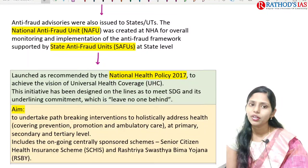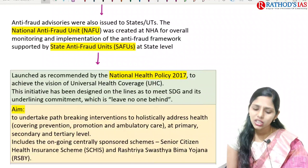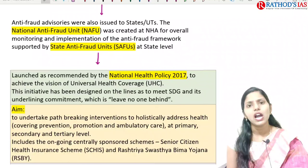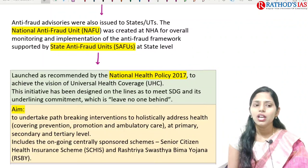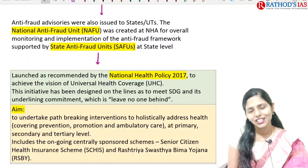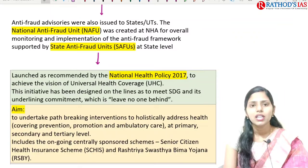The National Health Authority is the implementing agency of Ayushman Bharat. It issued anti-fraud guidelines and advisories to states and union territories, and created a National Anti-Fraud Unit for overall monitoring and implementation of the anti-fraud framework. At the state level, it is supported by State Anti-Fraud Units. The Ayushman Bharat scheme was launched based on recommendations of the National Health Policy of 2017, aiming for universal health coverage.